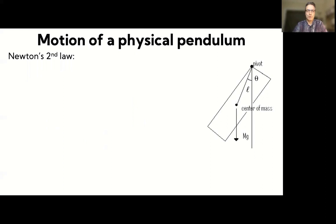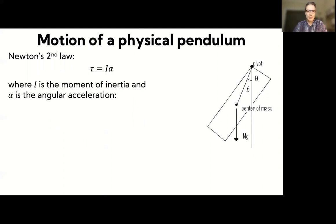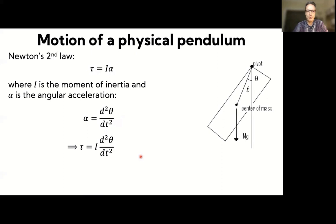Newton's second law for rotation is tau equals I times alpha, where tau is the torque, I is the moment of inertia, and alpha is the angular acceleration. The angular acceleration is the second derivative of the angle theta with respect to time — d²θ/dt². Plugging that in, we get: torque equals I times d²θ/dt².